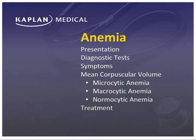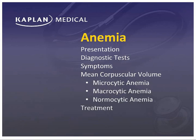This first section of Hematology is anemia. We're going to look at the presentation, diagnostic test symptoms, and most importantly, start the largest collection of individual tests where they have only one disease. For each of these tests, we're going to look at them based on cell size — is it micro, is it macro, is it normocytic, normal cell size, and what's the treatment?